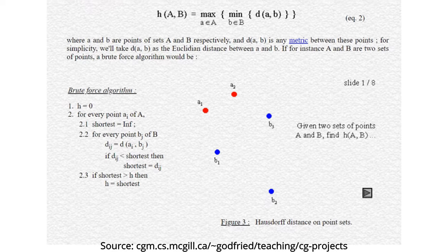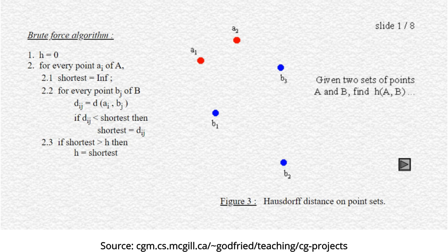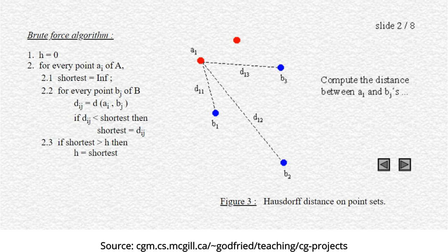From set A we pick point a1 first and then calculate the distances to all the points in set B—that is b1, b2, and b3—and then we keep the shortest distance out of all three.